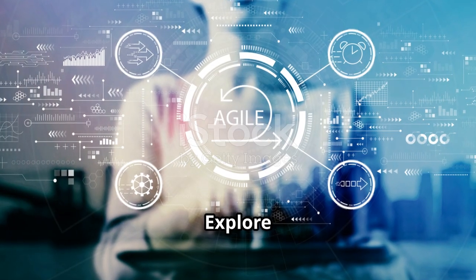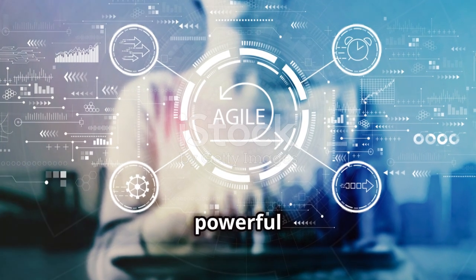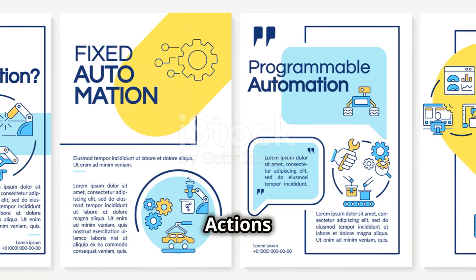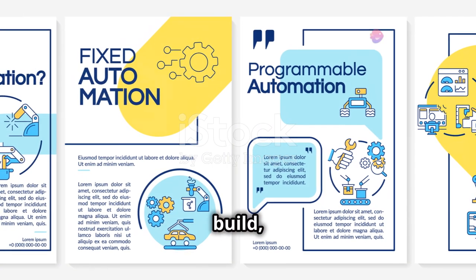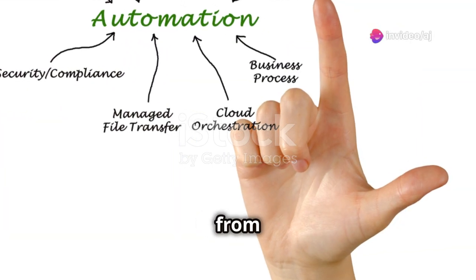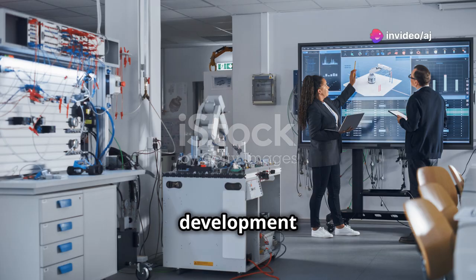Step 6: Explore GitHub Actions — a powerful automation tool. GitHub Actions can help you build, test, and deploy your code directly from GitHub, streamlining your development workflow.